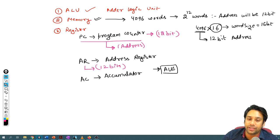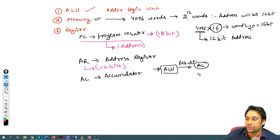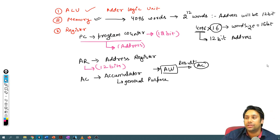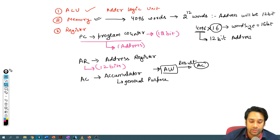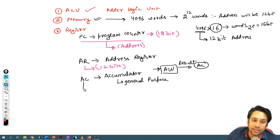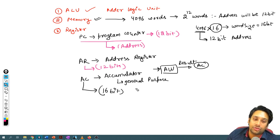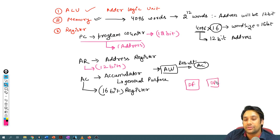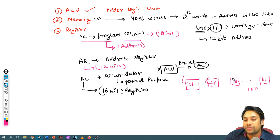The accumulator is a general purpose register. When the ALU performs calculations, the result of those calculations is stored in the accumulator. It stores data, so the accumulator will be 16 bits. A 16-bit register is built simply by taking 16 D flip-flops — each D flip-flop stores 1 bit of information.